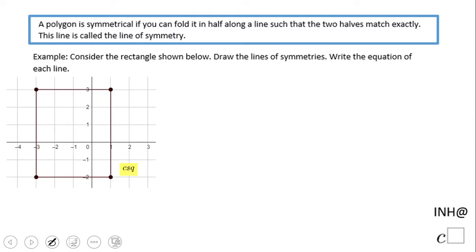Welcome to C squared. In this example, we're going to look at the lines of symmetry of this rectangle on the rectangular grid and write the equation of each line.